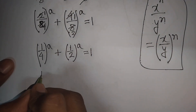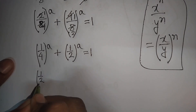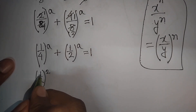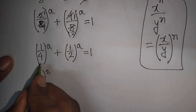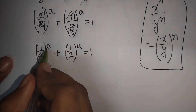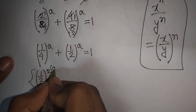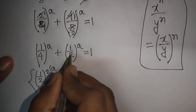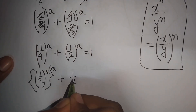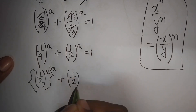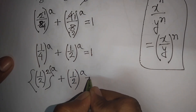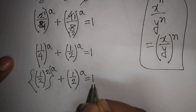Now, 1/4 can be written as (1/2) to the power 2. So the first bracket (1/4)^a becomes (1/2)^2 to the power a, plus (1/2)^a is equal to 1.